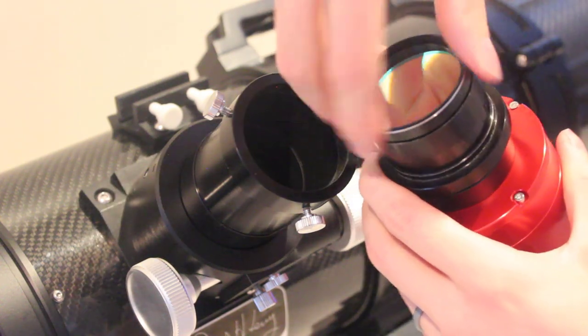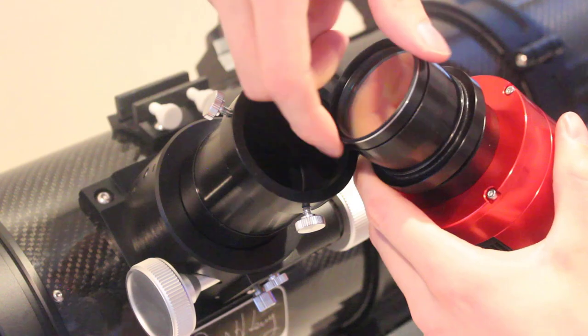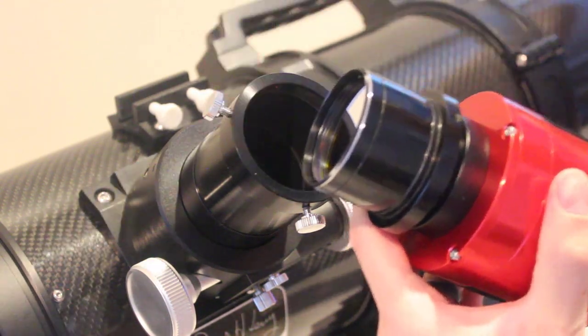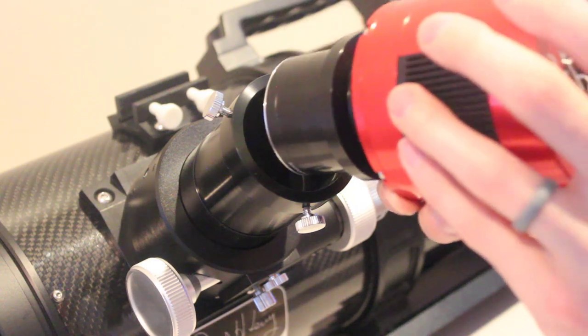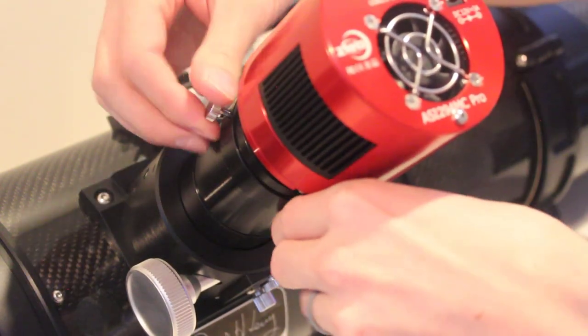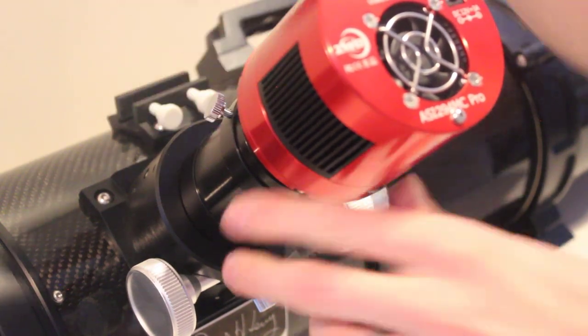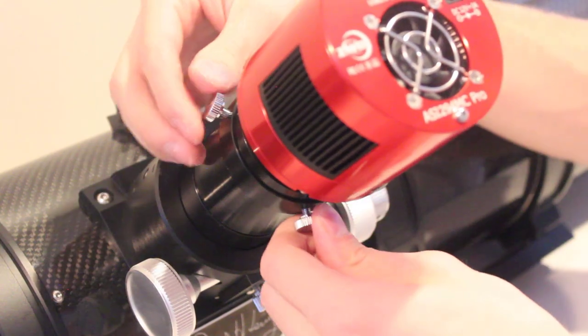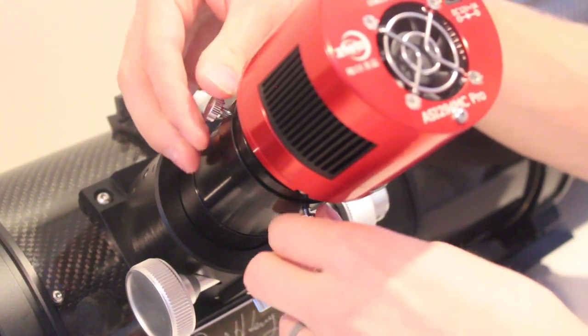So if I take this OptiLong L-Enhance here, it just simply screws right in, and the whole thing inserts, and I can tighten things down. So this method is very simple for getting things how you want, you can rotate your camera, get filters on there, but the disadvantages being...